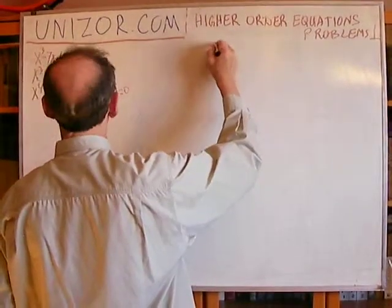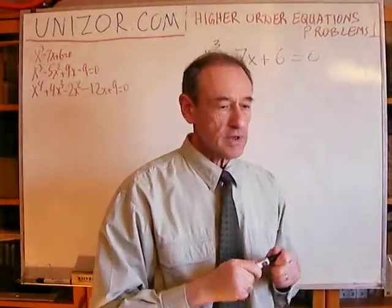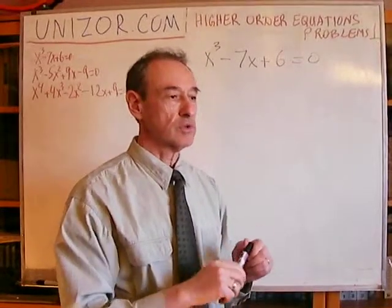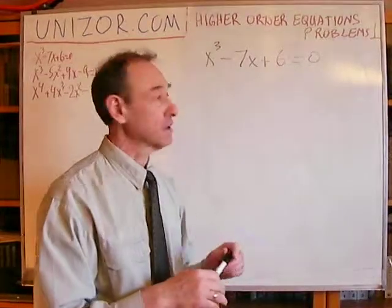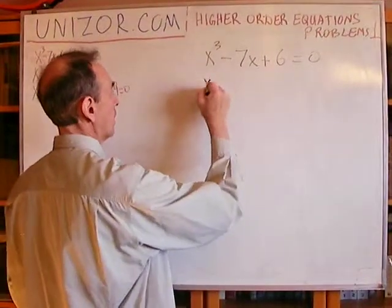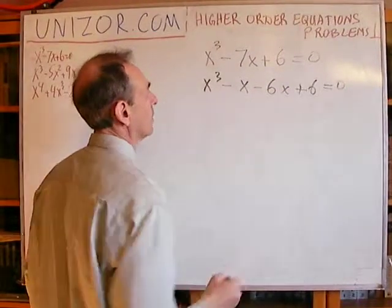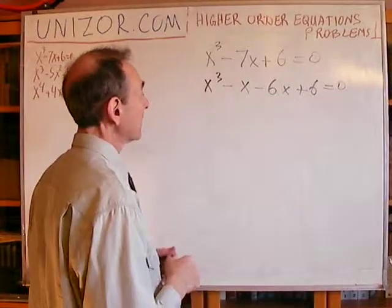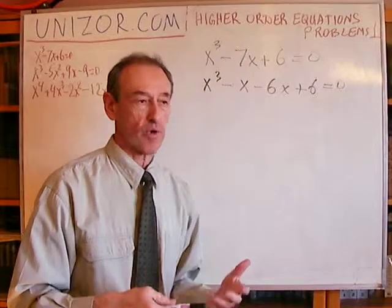The first one is x cubed minus 7x plus 6 equals 0. First of all, even without going into the technique I'm going to use in all these examples, I can see something right up front just looking at this particular equation. 7x can be represented as minus x minus 6x plus 6. Why did I decide to do this? I think I see, looking at this, that this is something which is the way to simplify the problem.